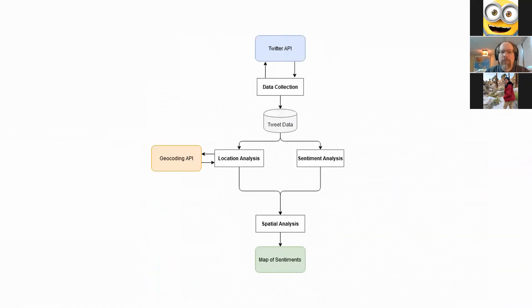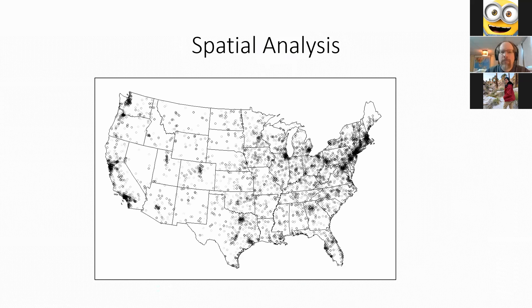At this point we have a latitude and longitude and a sentiment score for each tweet, and we're ready for the final stage: spatial analysis, where we create and examine different ways of mapping the sentiment.